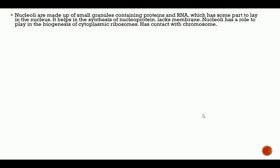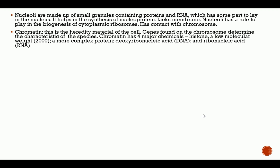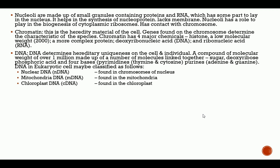Chromatin is the regulatory material of the cell. Genes found on the chromosomes determine the characteristics of the species. Chromatin has four major chemicals: histone, a low molecular weight protein, a more complex protein, deoxyribonucleic acid (DNA), and ribonucleic acid (RNA). DNA determines the hereditary uniqueness of the cell and individual.